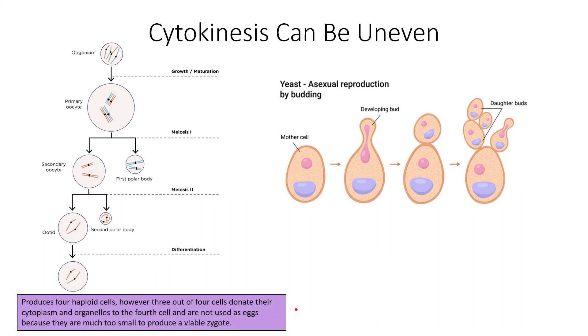When we talk about oogenesis, this is a process by which four haploid cells are produced, though it only appears as though one haploid cell is made. Through meiosis one and two, polar bodies are produced which eventually get reused and recycled within the female tissue. Three of the four cells donate their cytoplasm and organelles to the fourth cell and are not used as mature egg cells because they are much too small to produce a viable zygote. During oogenesis — the production of the mature female ovum — females undergo meiosis one and two, dividing the nucleus twice to produce haploid mature gametes.